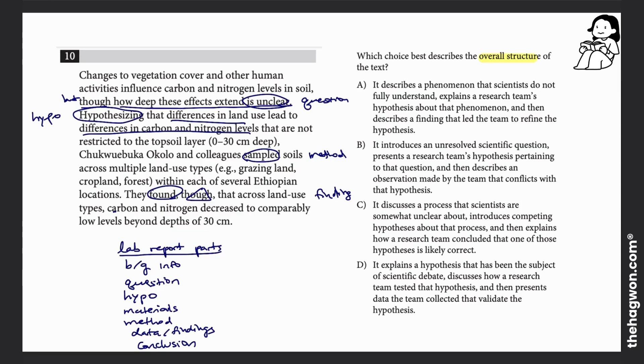So answer choice A says we begin with a phenomenon that we don't fully understand. Okay, phenomenon we don't understand—that can be my question. And then says we have my hypothesis. Yes, we saw that. And then it says we described a finding—sure, we saw that—but then it says that led the team to refine the hypothesis. We did not refine the hypothesis at the end of the passage; we just described the finding. So we don't come back to the hypothesis at the end. So answer choice A is incorrect.